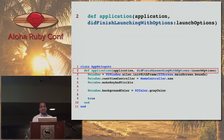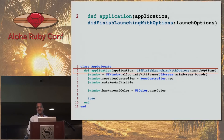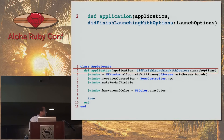In RubyMotion, you'll see some methods that look more like Objective-C methods. There is a gem called BubbleWrap that is wrapping around a lot of these Objective-C methods and making them look more Ruby-like. I'll show that in the demonstration as well.